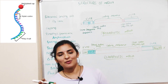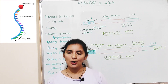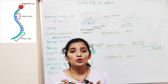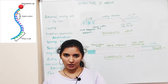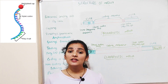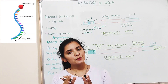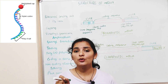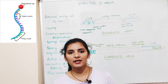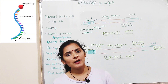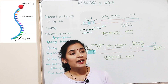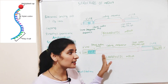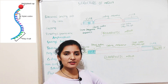The single-stranded mRNA consists of a sequence of nucleotides, and this sequence of nucleotides contains the genetic information. The genetic information in mRNA is in the form of a codon. A codon is a group of three successive nucleotides grouped together to form one codon, and each codon codes for a particular amino acid.